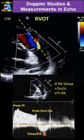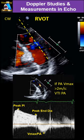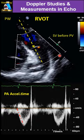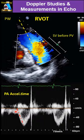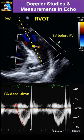Then we go to pulse Doppler on the RVOT — the same view, right before the pulmonary valve. We measure acceleration time. Make sure it corresponds exactly, starting at the R wave, after the click, and measure the peak.